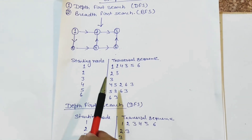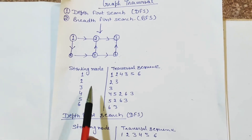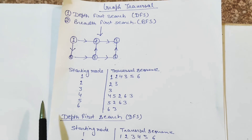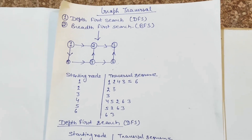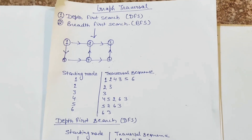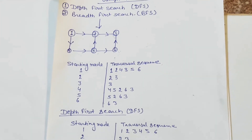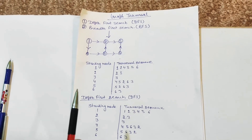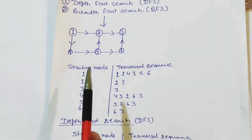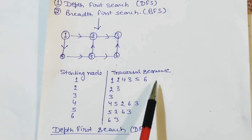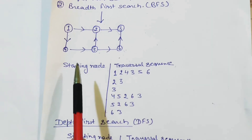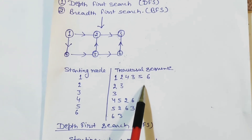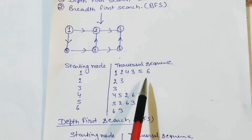There is a minor difference in graph traversal and tree traversal. In tree traversal, whatever values you traverse are unique. But in graph traversal, values can repeat.